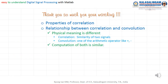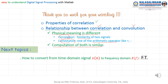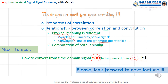Thank you so much for watching. Today I explained two properties of correlation and also explained the relationship between correlation and convolution. The physical meaning is different: correlation means similarity, while convolution means one of the arithmetic operators. But the computation is very similar. Next topic is how to convert from the time domain to the frequency domain, which we call the Fourier transform. Please look forward to the next lecture. Thank you very much.